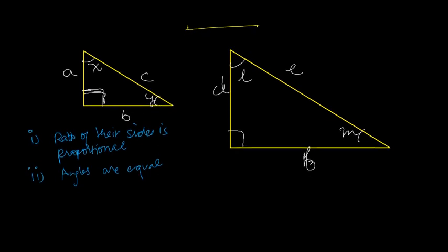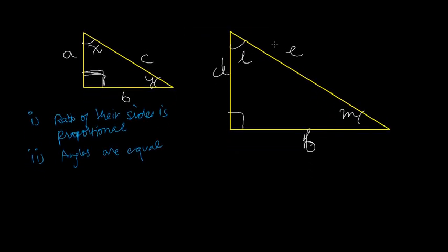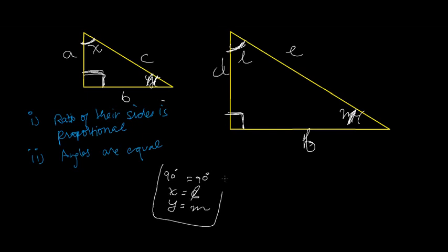I will explain how. Now, these two angles are 90 degrees, so one angle is equal: 90 degrees equals 90 degrees. This X is equal to this L, so X equals L. And this Y... so all the angles are equal.